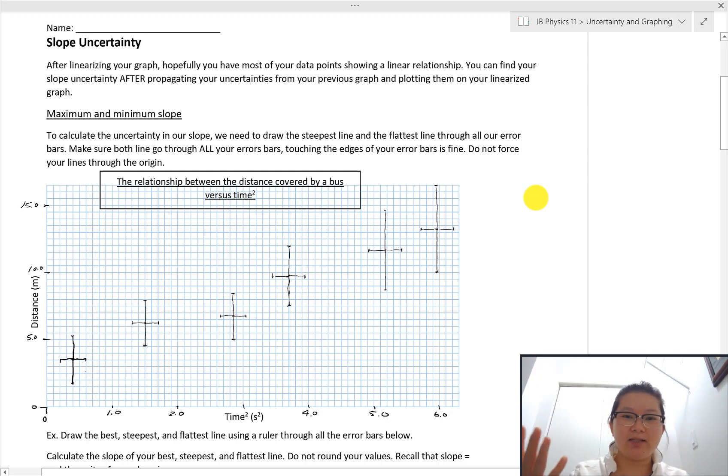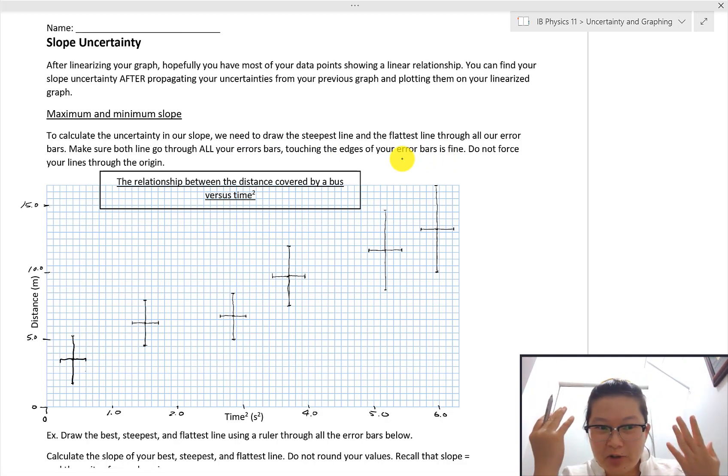And that should be it. So then let's talk about how to find slope uncertainty. Now I have this graph as an example here.